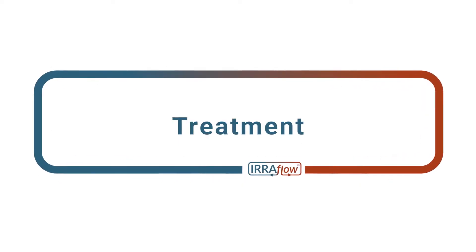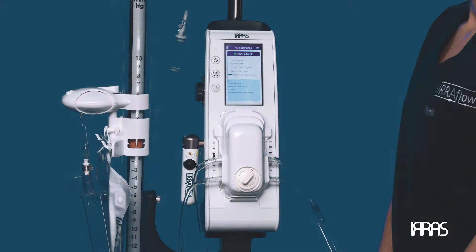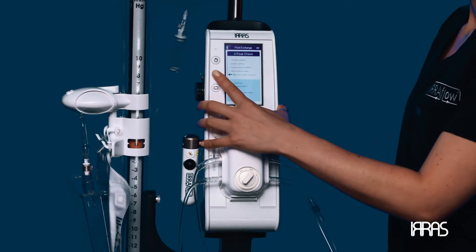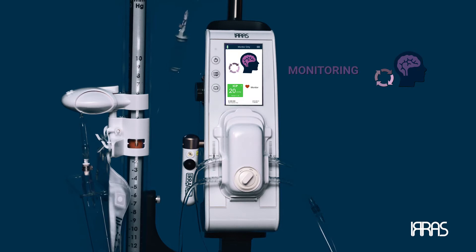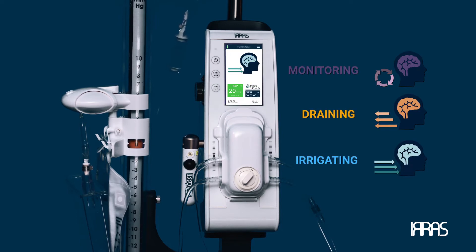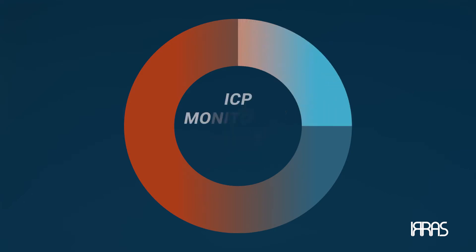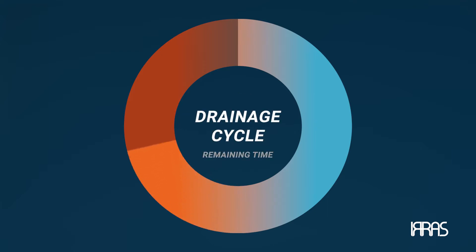Chapter 6: Treatment. Now that treatment has begun, the control unit will cycle between three phases: monitoring, draining, and irrigating. Keep in mind, the irrigation cycle will take one second, the ICP monitoring cycle will take nine seconds, and the rest of the cycle time will be applied to the drainage cycle.